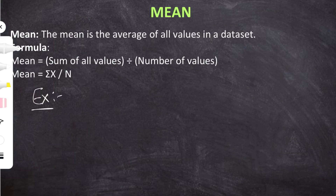Let's see what is mean. Mean is defined as sum of all observations divided by number of observations.